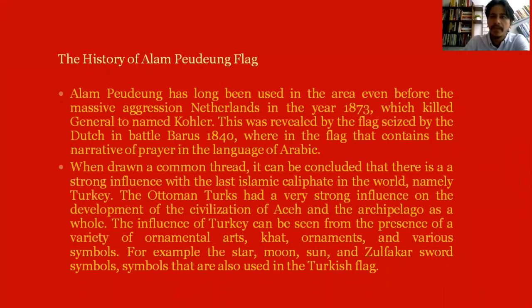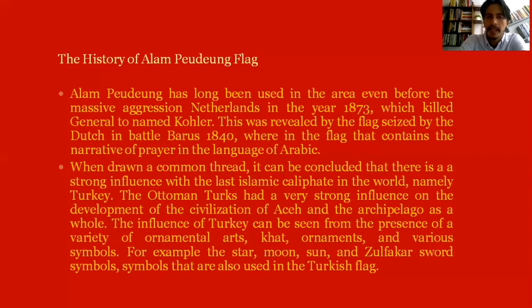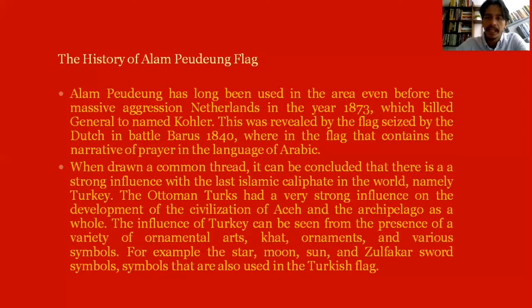The Alam Peudeung flag has long been used in the area before the massive Dutch aggression of 1873, which killed General Kohler. This was reflected by a flag seized by the Dutch in the Battle of Baruh in 1840, which contained a narrative prayer in Arabic. Drawing a connection, there is a strong influence from the last Islamic caliphate — namely Ottoman Turkey — on the development of Aceh's civilization and the wider Archipelago.